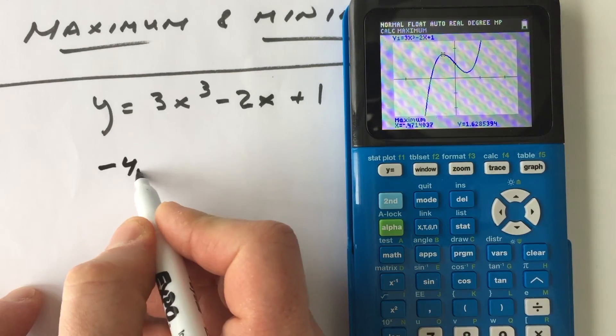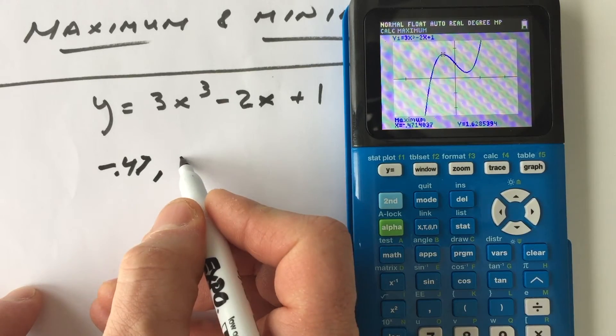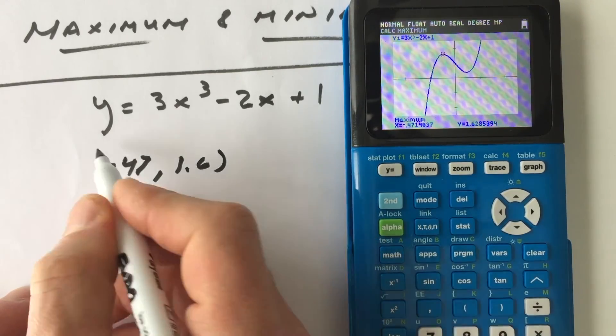I'll just write that down here. So negative 0.47 comma 1.6. So that's a relative max.